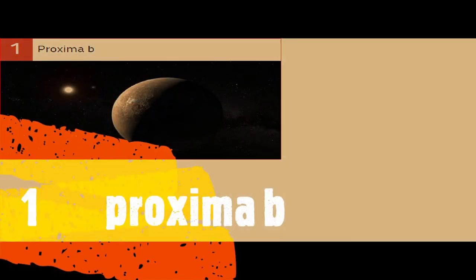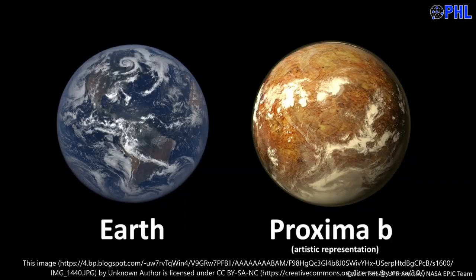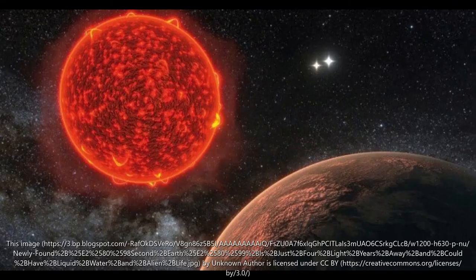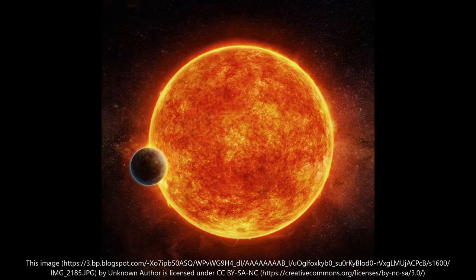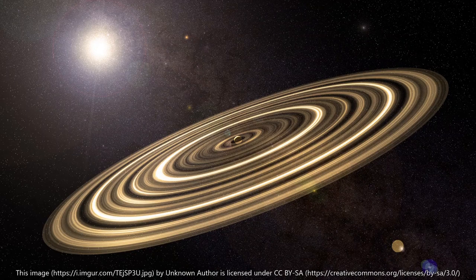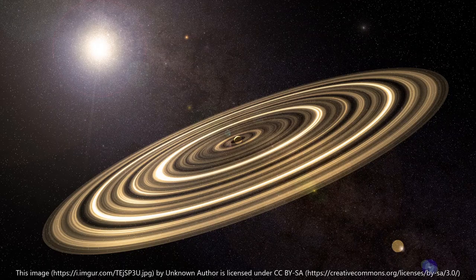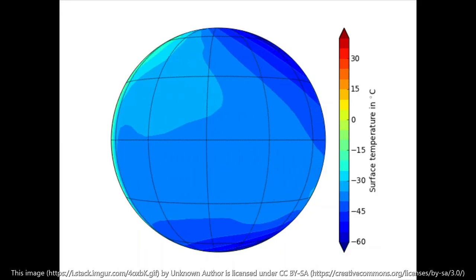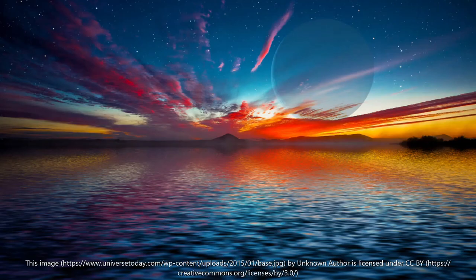Number 1: Proxima b. Proxima b looked promising when it was discovered. It orbits Proxima Centauri, a red dwarf star 4.24 light-years away from the Earth. The exoplanet interested astronomers who thought that it had water and Earth-like properties. However, they soon discovered that they were wrong. Proxima b is so close to Proxima Centauri that the exoplanet completes an orbit in 11 days.